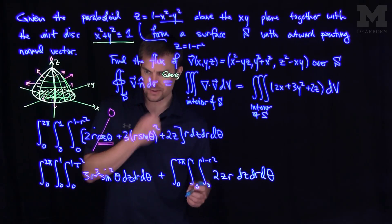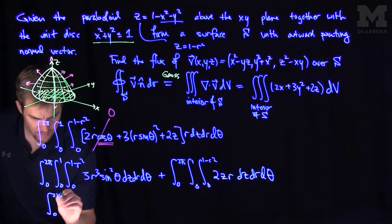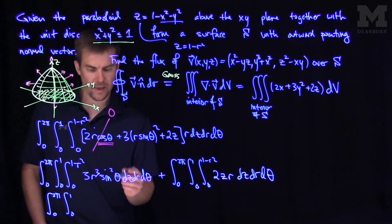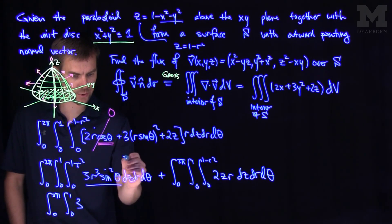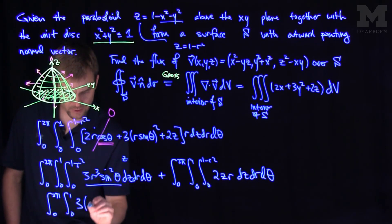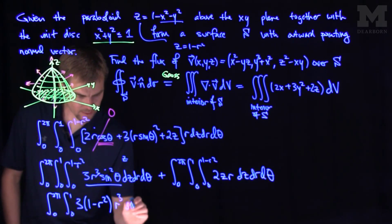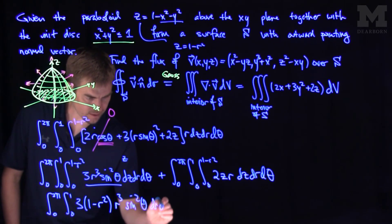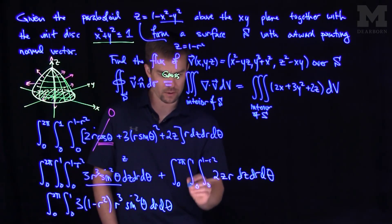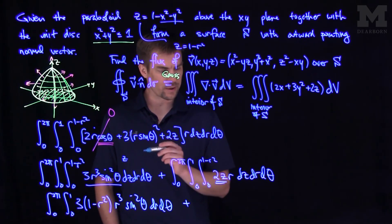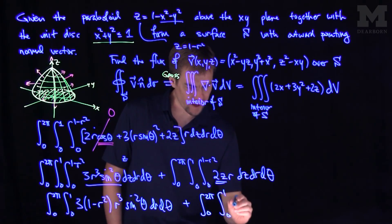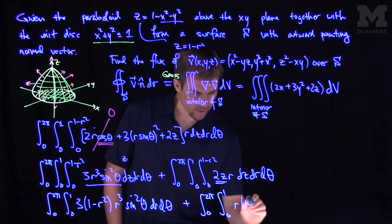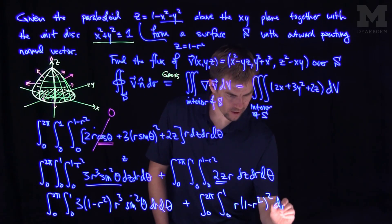Now we do one more simplification. For the first integral, since there is no z in the integrand, integrating over z just gives a factor of z evaluated from 0 to 1 minus r squared, yielding the integral from 0 to 2pi, integral from 0 to 1, of 3 times 1 minus r squared times r cubed times sine squared theta dr d theta. The second integral over z gives z squared, so we get the integral from 0 to 2pi, integral from 0 to 1, of r times 1 minus r squared squared, dr d theta.